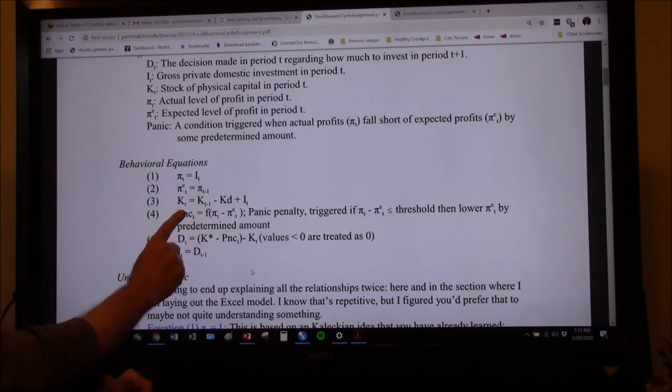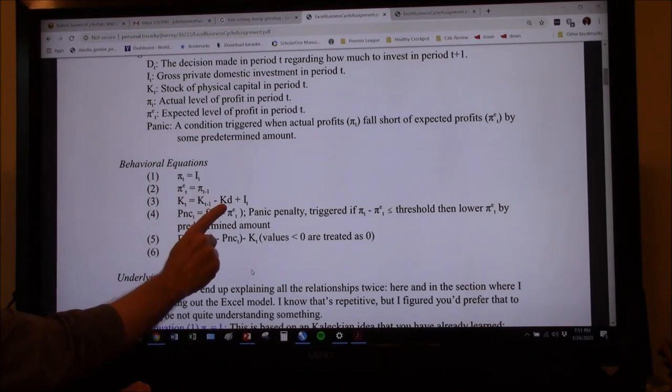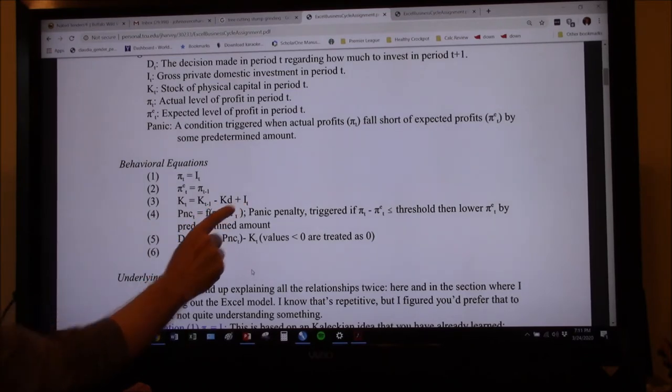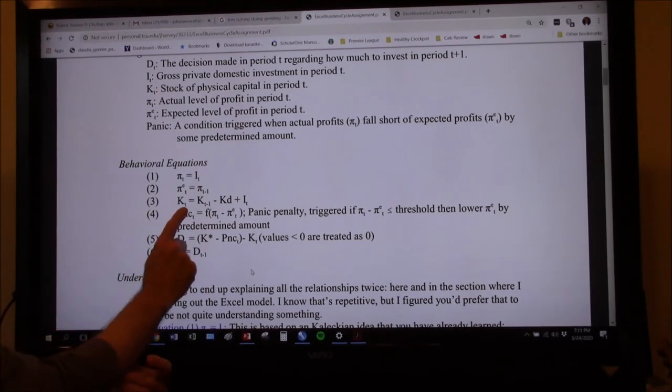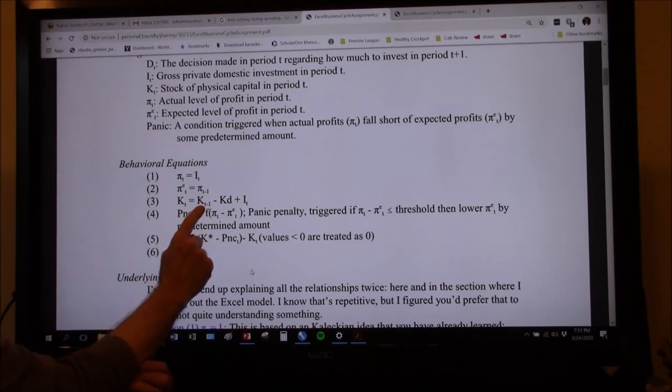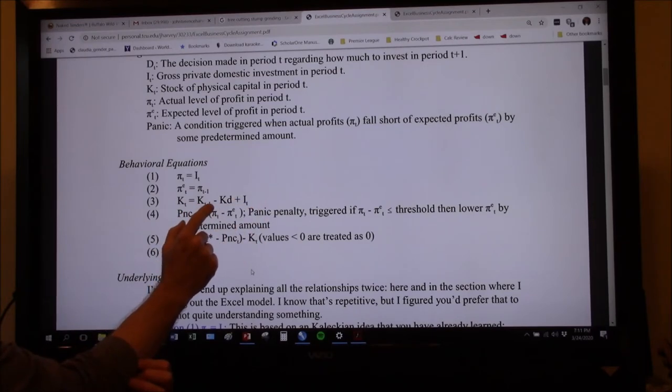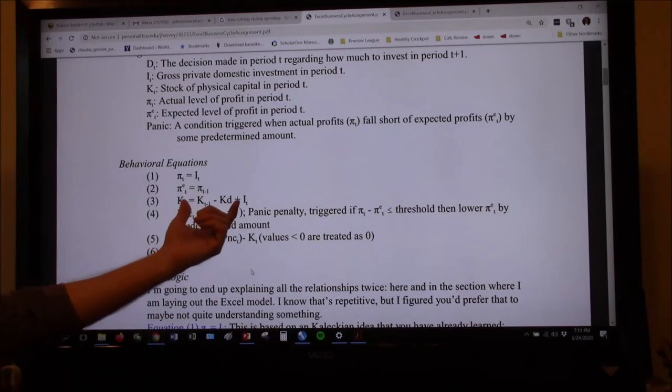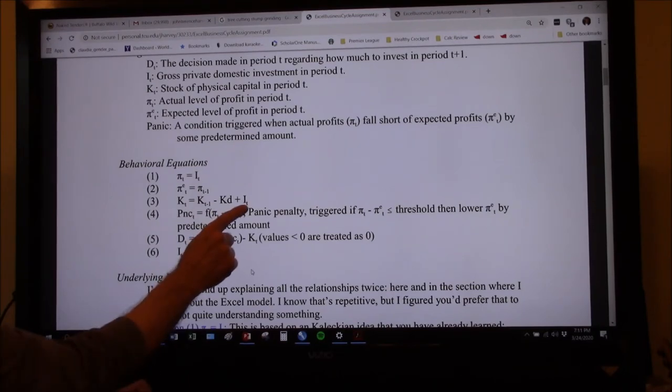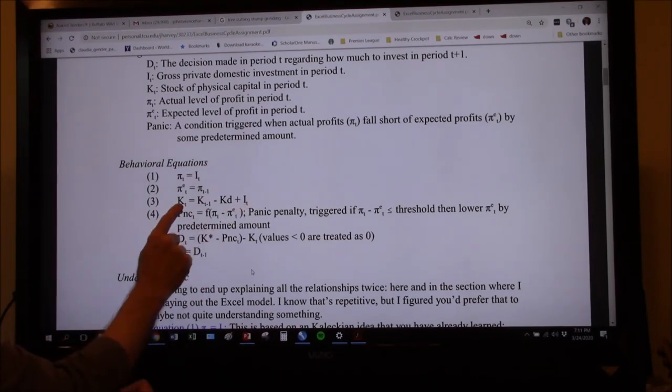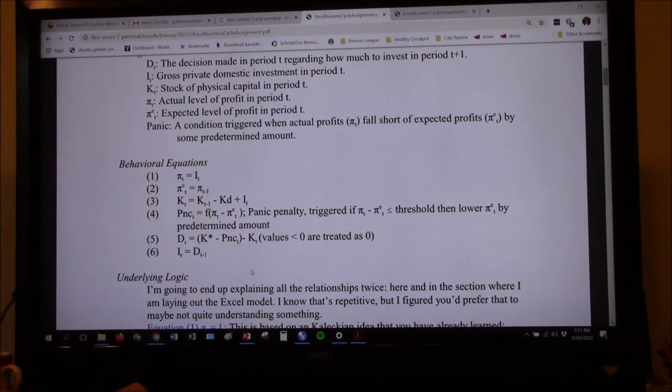Now, stock of capital. The stock of capital this quarter is equal to what it was last quarter minus any depreciation plus any new investment. So really no different than what we talked about with the Davidson graph, although we're laying it out differently here. The stock of capital in period T is equal to whatever it was in period T minus one minus how much wore out. So this expression right here, the KT minus one minus KD, is going to be, well, that's how much was left over after the last quarter was done. Because some of the stuff wore out. Plus we did new investment. So this period's total capital is equal to last period's minus depreciation plus any new building.